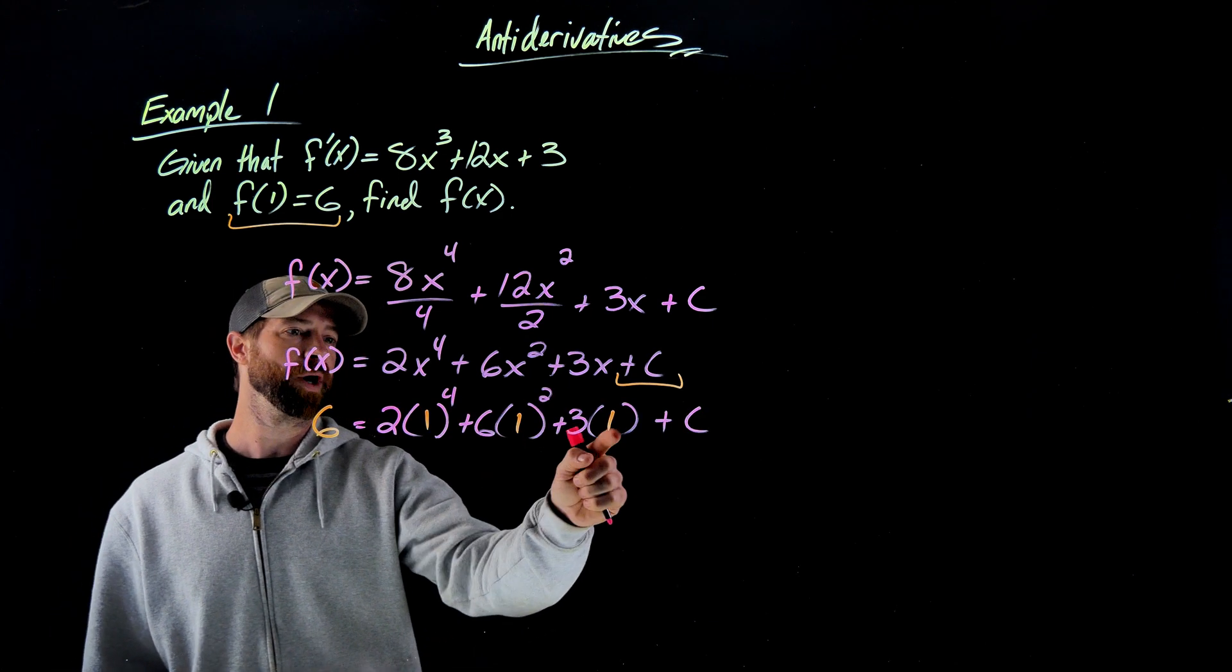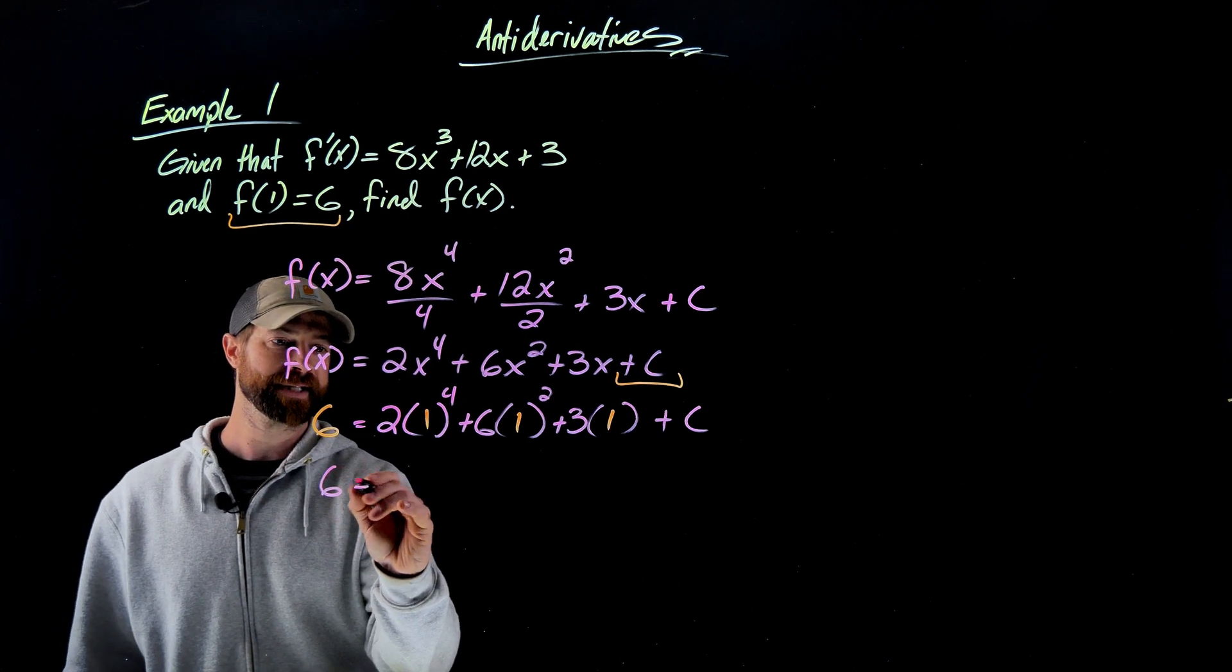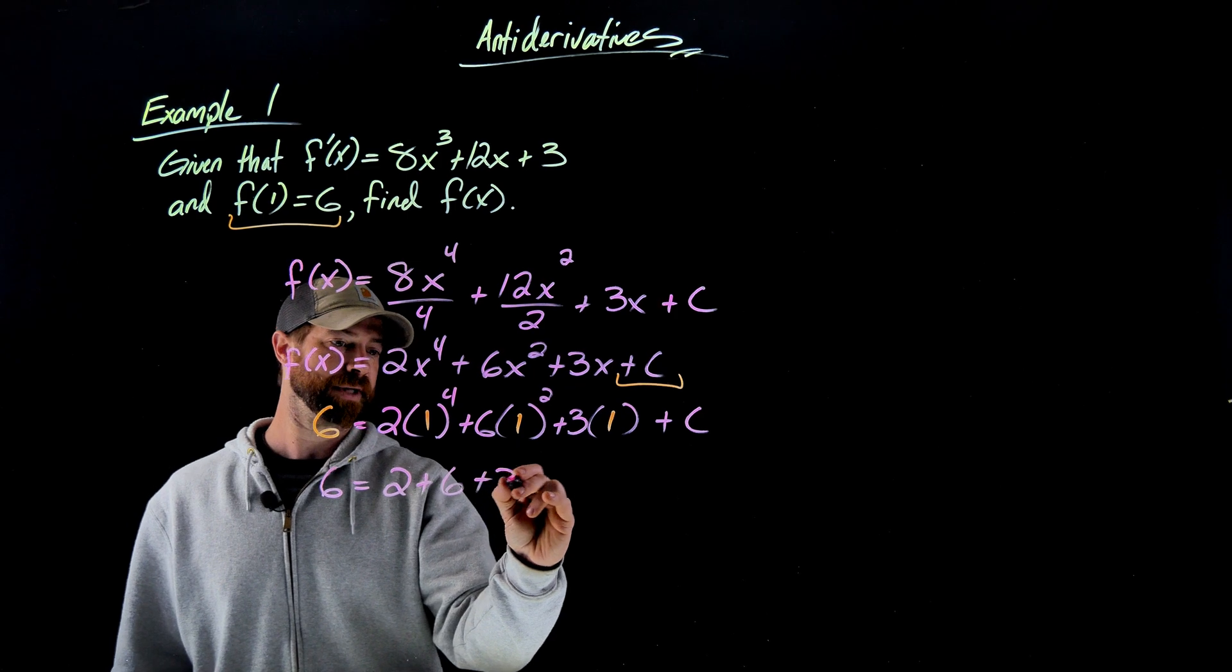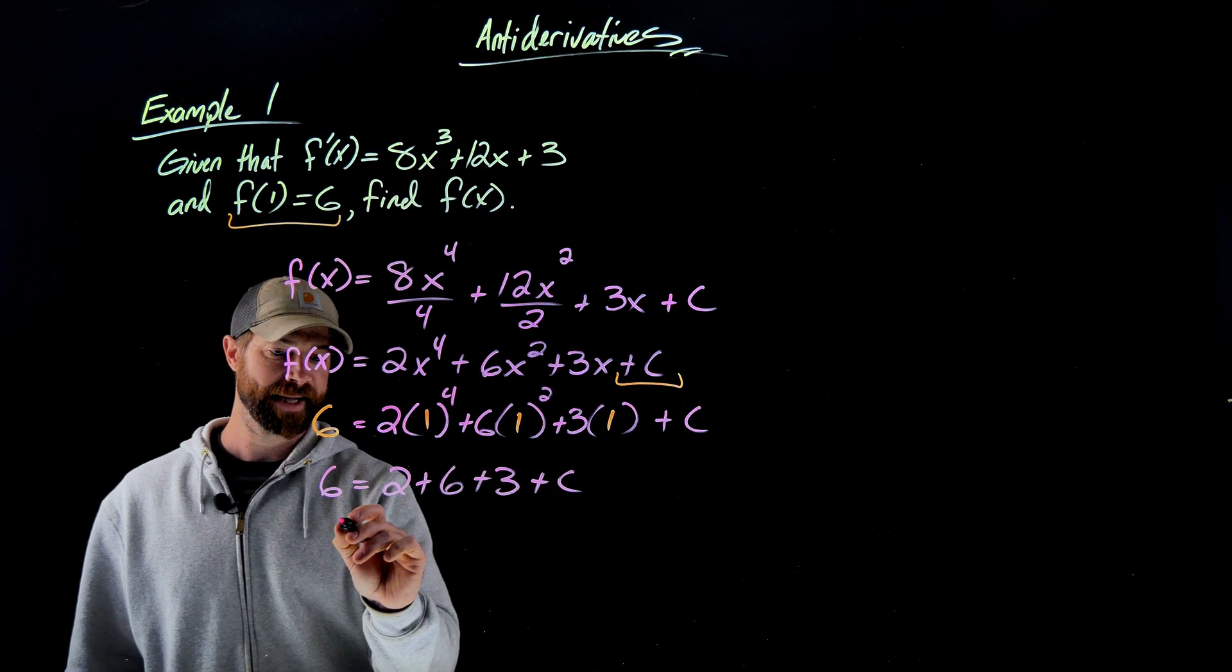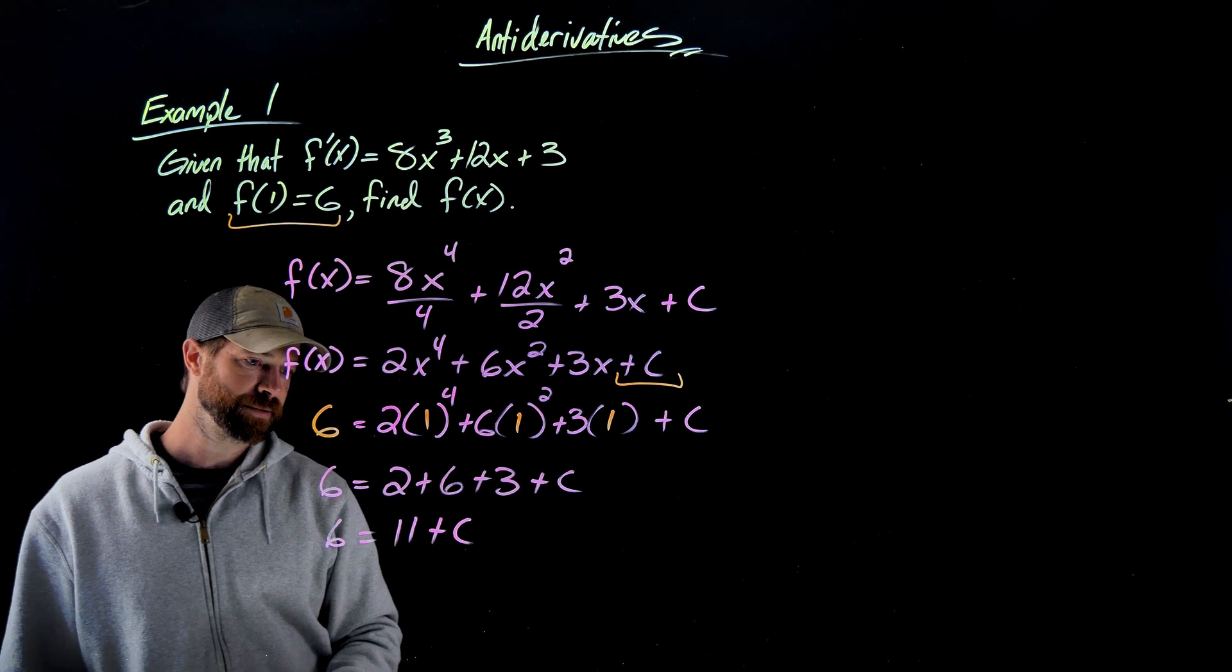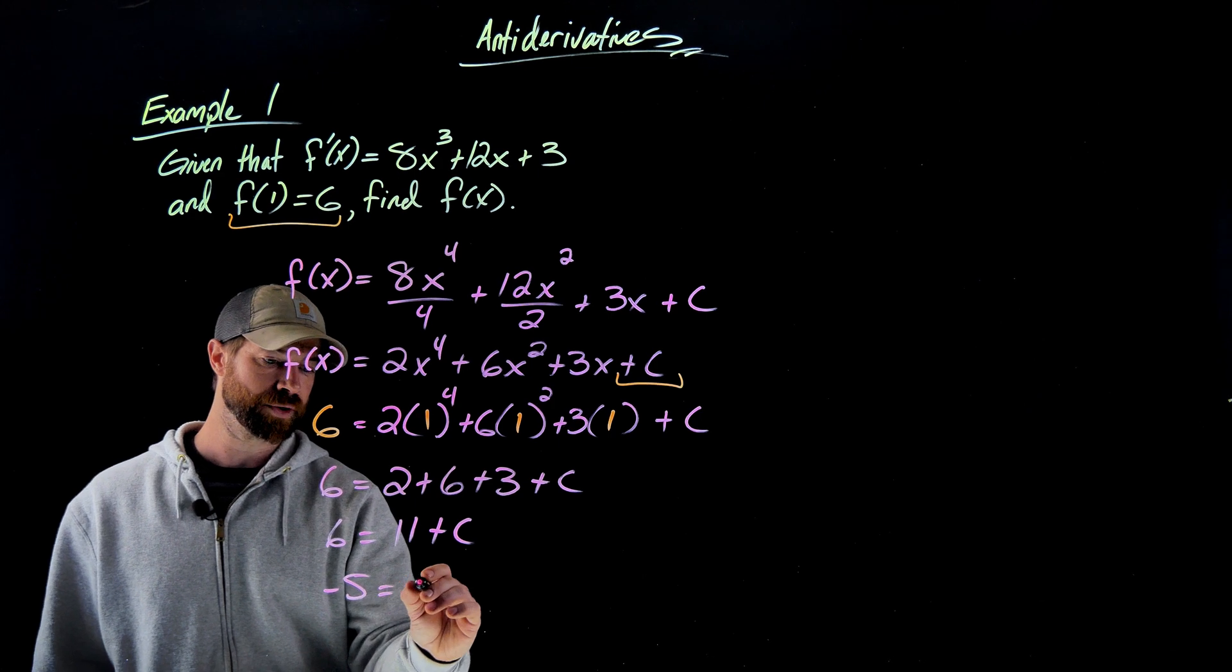So here I have plugged in 1 for x, set my function equal to 6. Let's solve this now for c. This becomes 2 plus 6 plus 3 plus c. Adding these together gives me 6 equals 11 plus c. Subtracting 11 from both sides would give me negative 5 equals c.